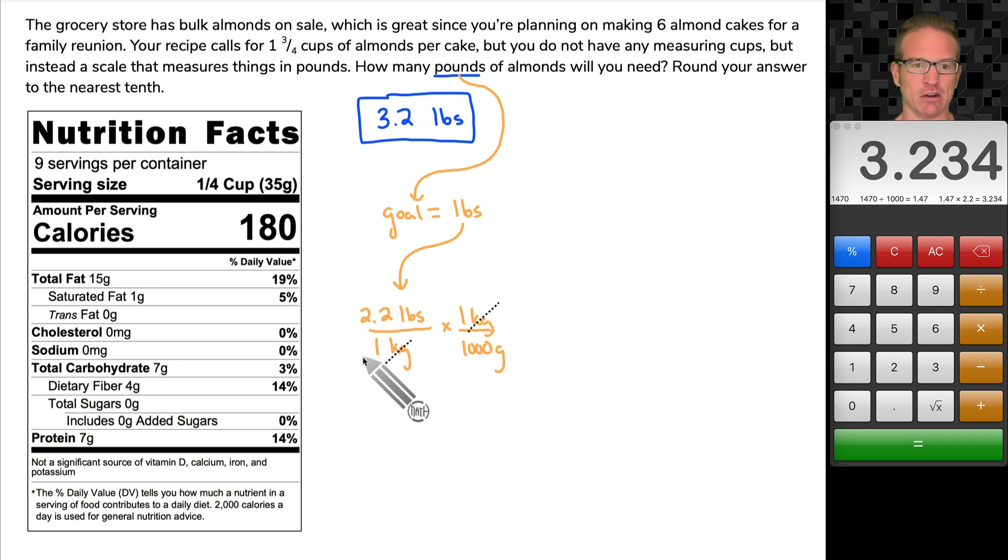Now, some of you may have just said, well, why couldn't we put 1000 grams right here? And you can, because that's equal to one kilogram. But I'm showing the conversions step by step. We converted to grams. And now we want to get rid of grams, just like we got rid of kilograms.